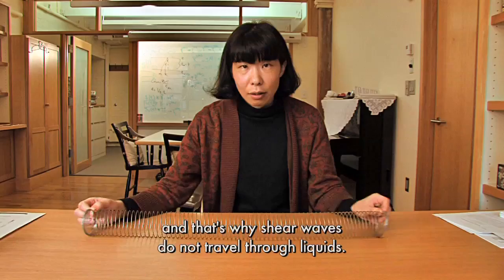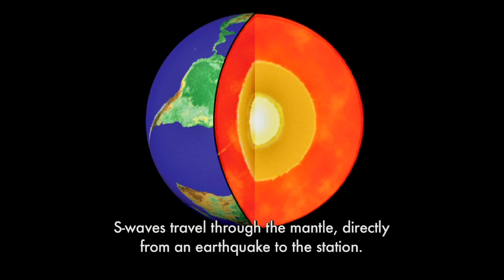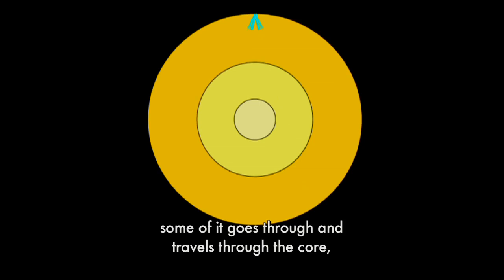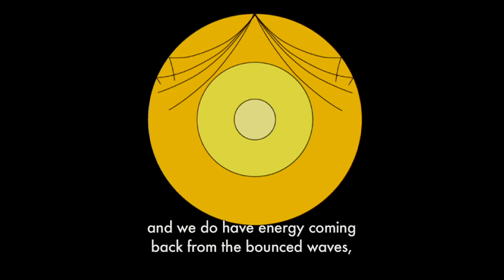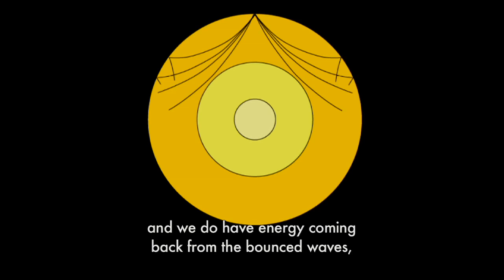S waves travel through the mantle directly from earthquake to the station. Now if the compressional wave hits the core-mantle boundary, some of it goes through and travels through the core and comes out on the other side of the world, but some of them get bounced back. And we do have energy coming back from the bounced waves as well as the waves that travel through the core.